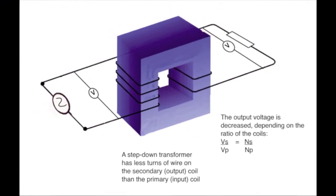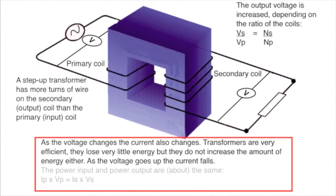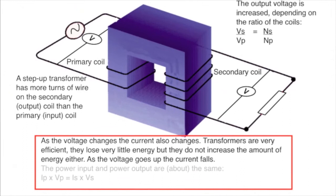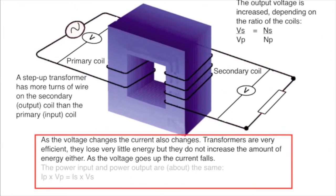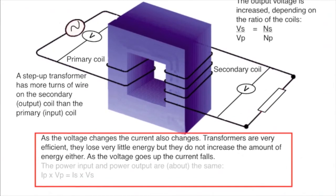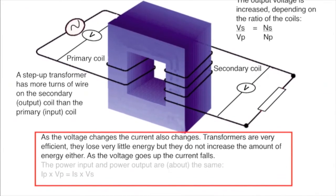Although the voltage is increased, the energy input and energy output to a transformer are almost the same. As the voltage changes, the current also changes. If the voltage is ten times higher, the current will fall to one-tenth of the value.